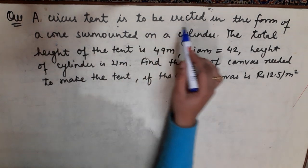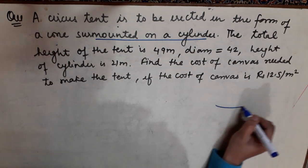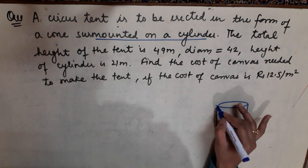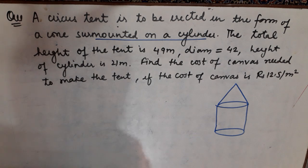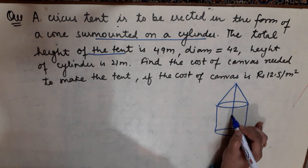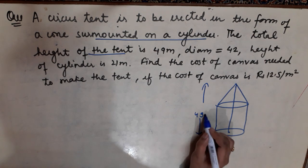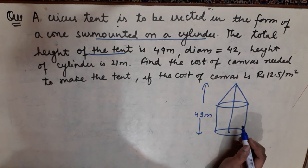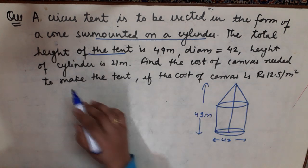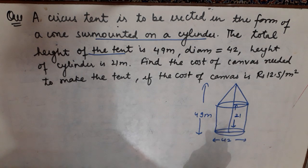The question is: a circus tent is to be erected in the form of a cone surmounted on a cylinder. The circus tent has one cylinder with a cone on top. The total height of the tent is 49 meters. The diameter is 42, and the height of the cylinder is 21 meters.